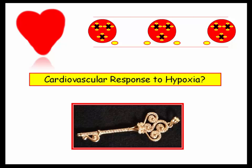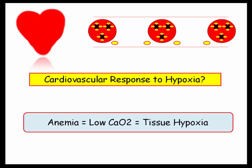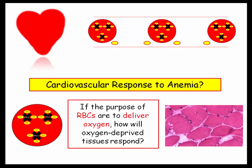What does the body normally do in this setting of hypoxia? If you appreciate that anemia equals decreased oxygen content, which essentially equals hypoxia, the rest is simple and makes sense. Anemia equals low oxygen content, which equals tissue hypoxia. If the purpose of RBCs is to deliver oxygen, how will oxygen-deprived tissues respond? The answer is vasodilation — vessels vasodilate in an attempt to deliver oxygen.